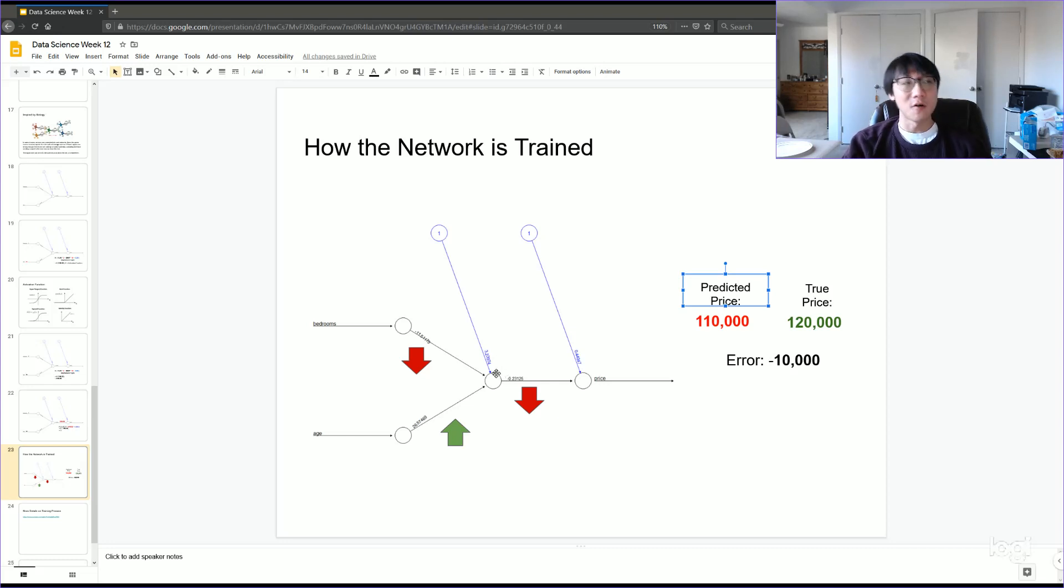Now, of course, in reality, you'd be training the neural network with more than one observation. So obviously, if we were just trying to match this 120,000 number, we could adjust the weights until our predicted value is very close to it. But we're not just trying to match the price of that one home, right?